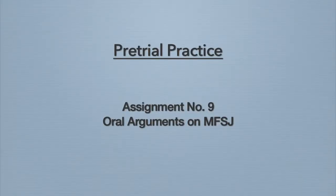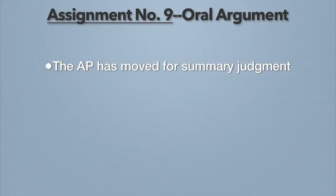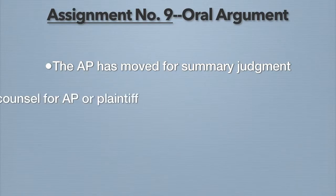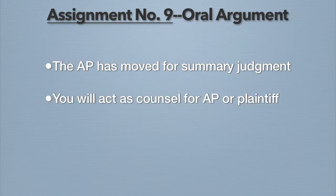Welcome to assignment number nine: arguing a motion for summary judgment. The defendant, Associated Press, has moved pursuant to Rule 56 for summary judgment on Peterson's libel claim. Using the summary judgment materials actually filed in the Peterson v. New York Times case, you will act either as counsel for the Associated Press in arguing for the motion, or as counsel for the plaintiff in opposing the motion.